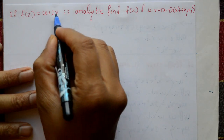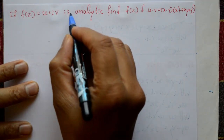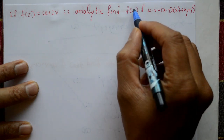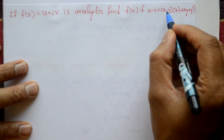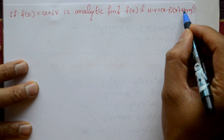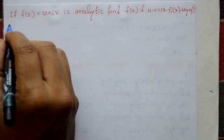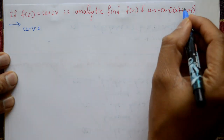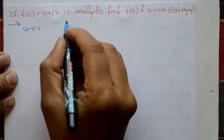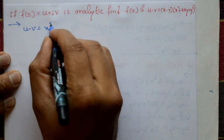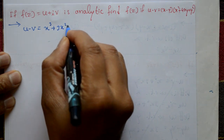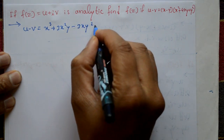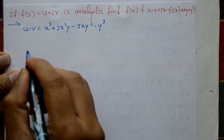If f(z) = u + iv is analytic, find f(z) if u minus v equals (x - y)(x² + 4xy + y²). This problem is very simple. Once again, u minus v equals, opening the bracket, x³ + 3x²y - 3xy² - y³ on simplification.